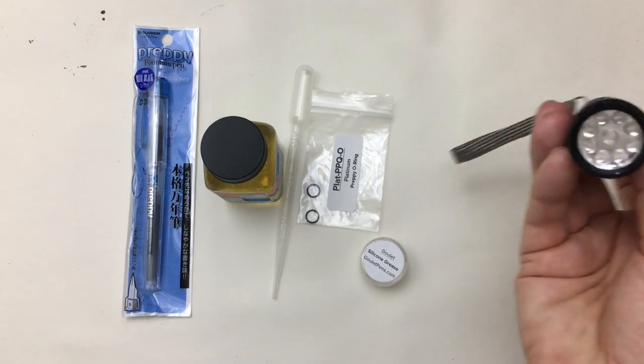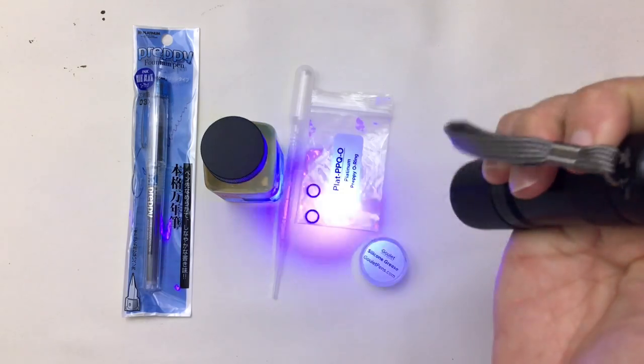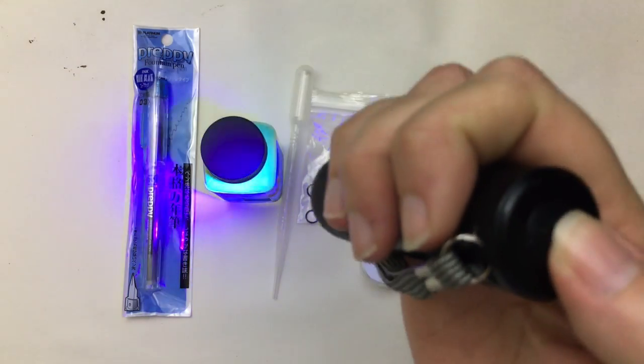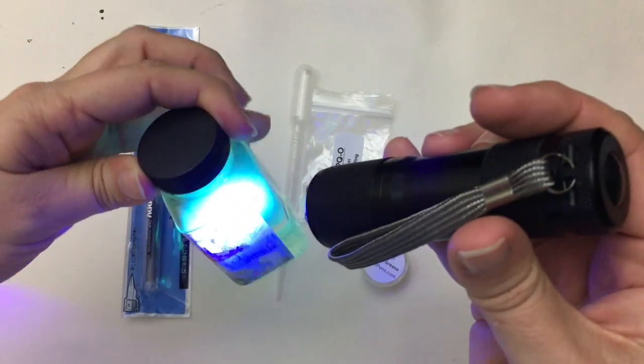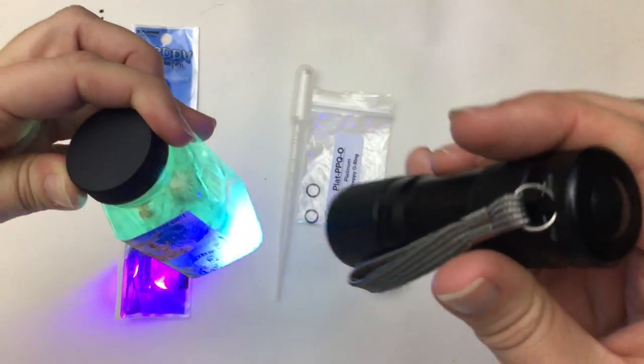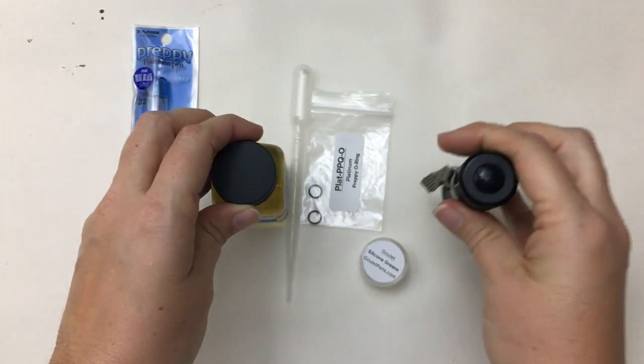And the last thing you will need is a blacklight. And you can find these all day, every day on Amazon. Very inexpensive. They take AAA batteries. And now let's get started on the tutorial.